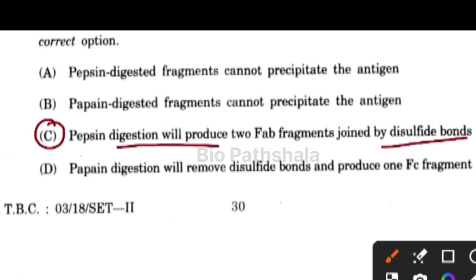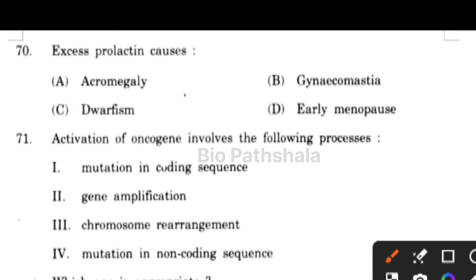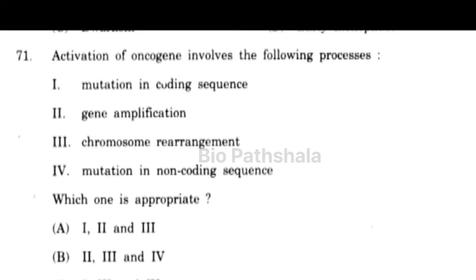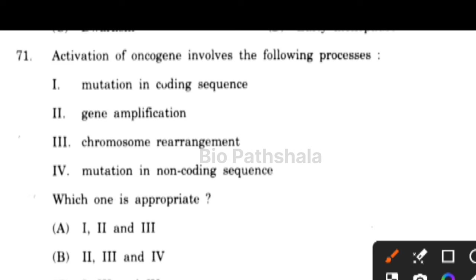Next question: excess of prolactin causes gynecomastia. Next question: activation of an oncogene involves which of the following processes? First is mutation in coding sequence, next is gene amplification, chromosome rearrangement, and last is mutation in non-coding sequence. Mutation in non-coding sequence would have no effect, so the first three options are correct.